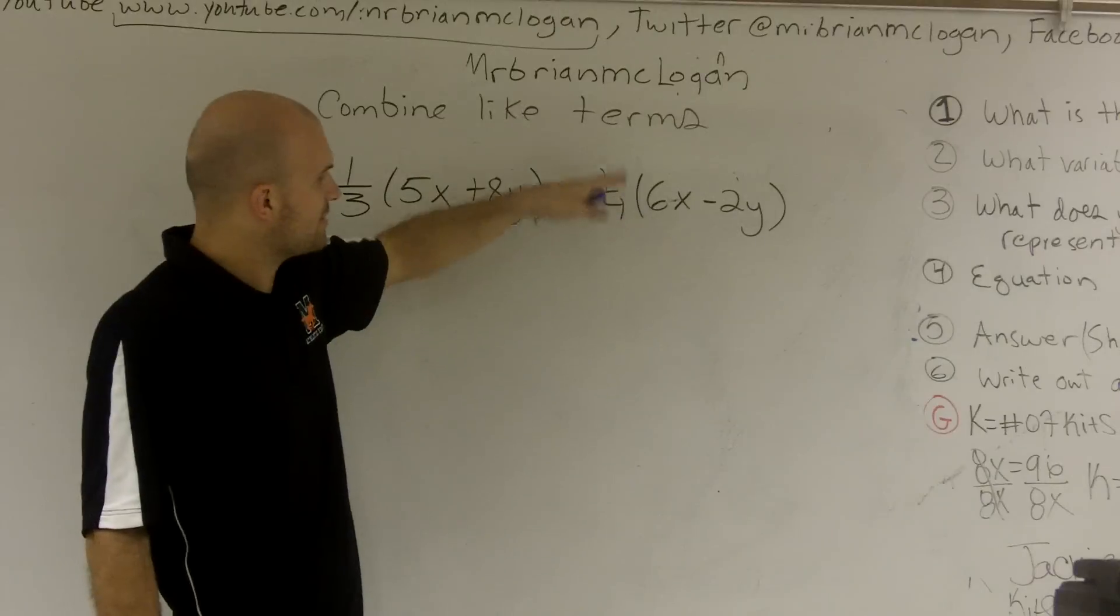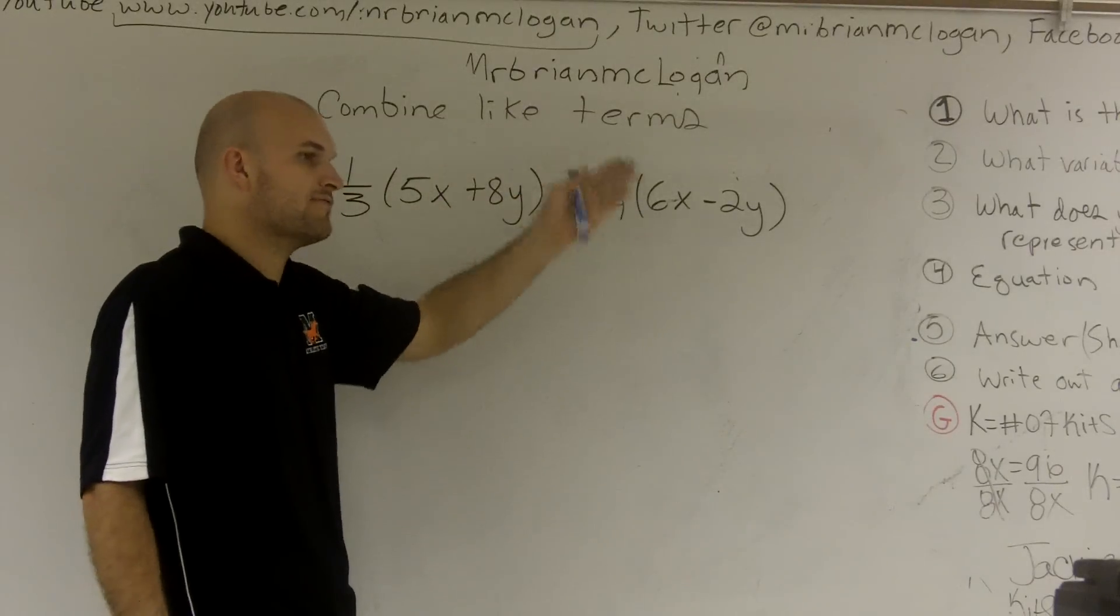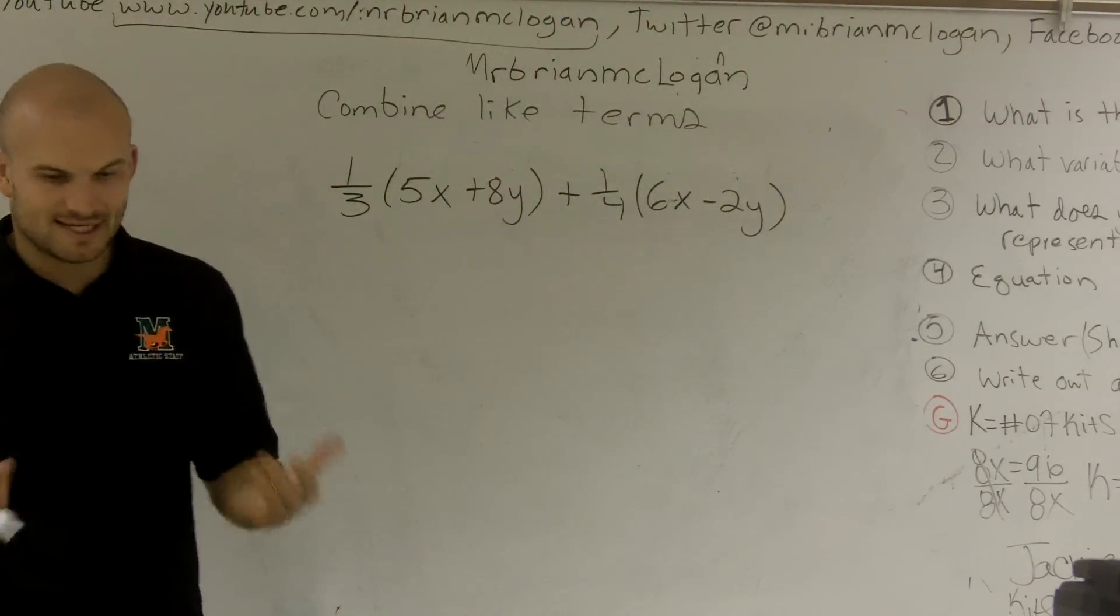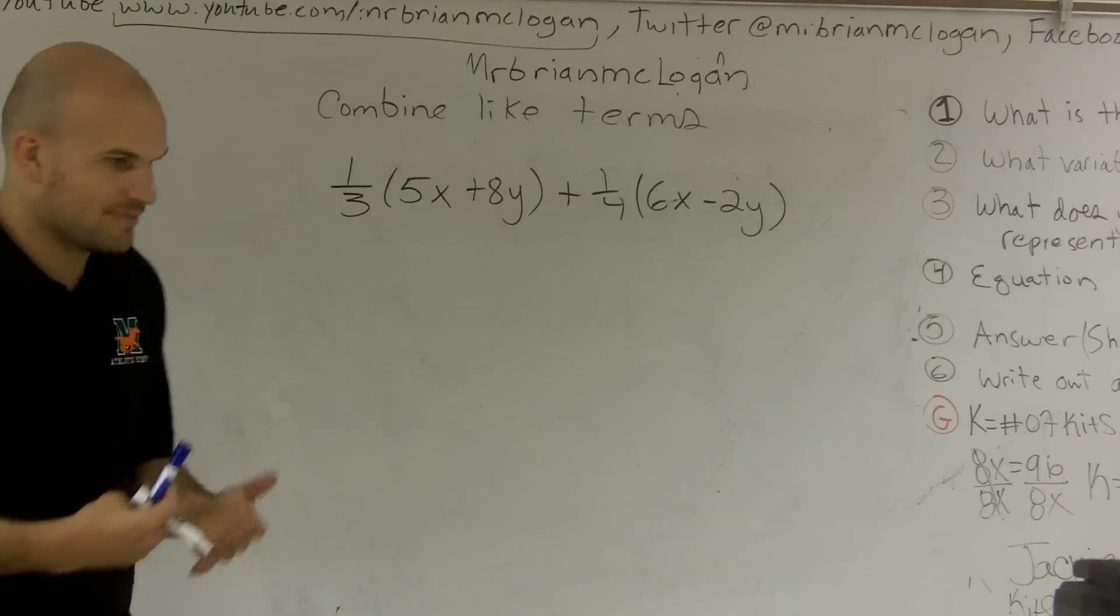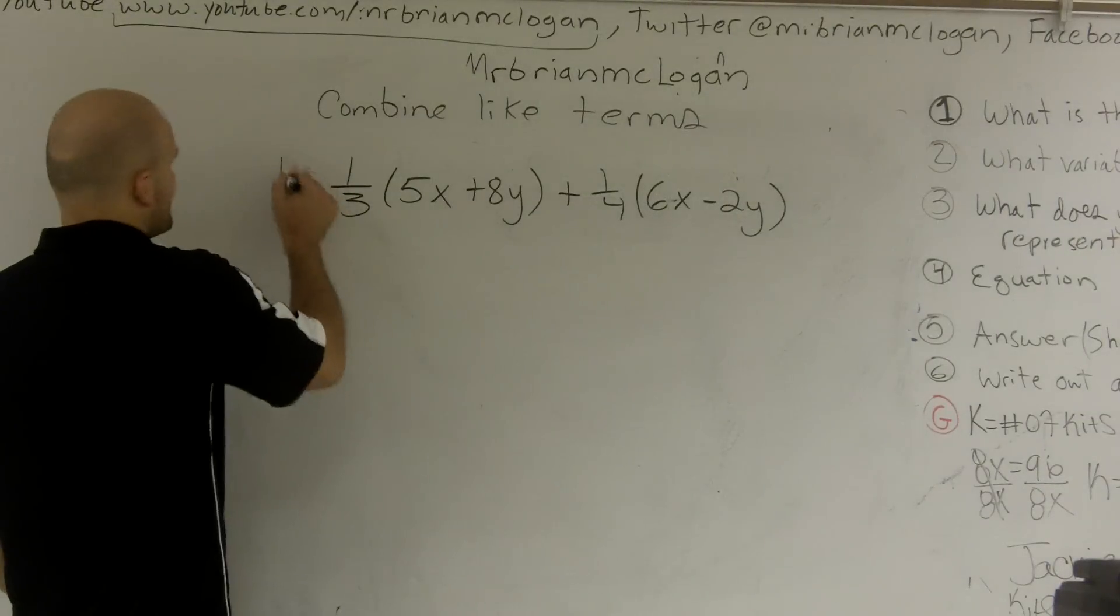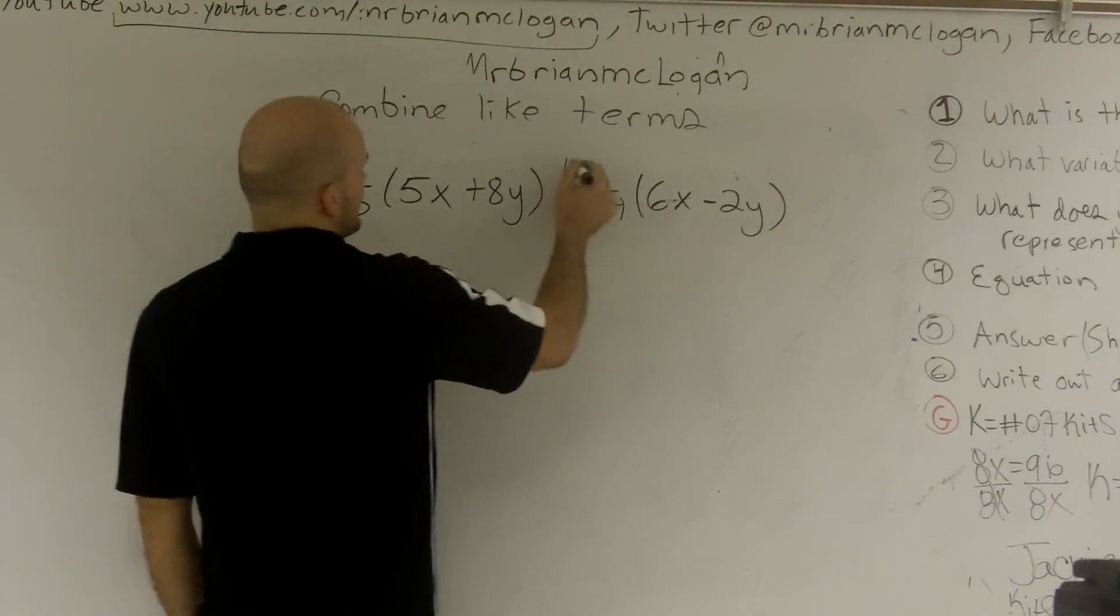And over here, if I want to get rid of my 1/4, I need to multiply by 4 and get rid of it. But since I want to keep this the same, I don't want to be changing my answer, I'm going to multiply everything by 12 here and 12 here.